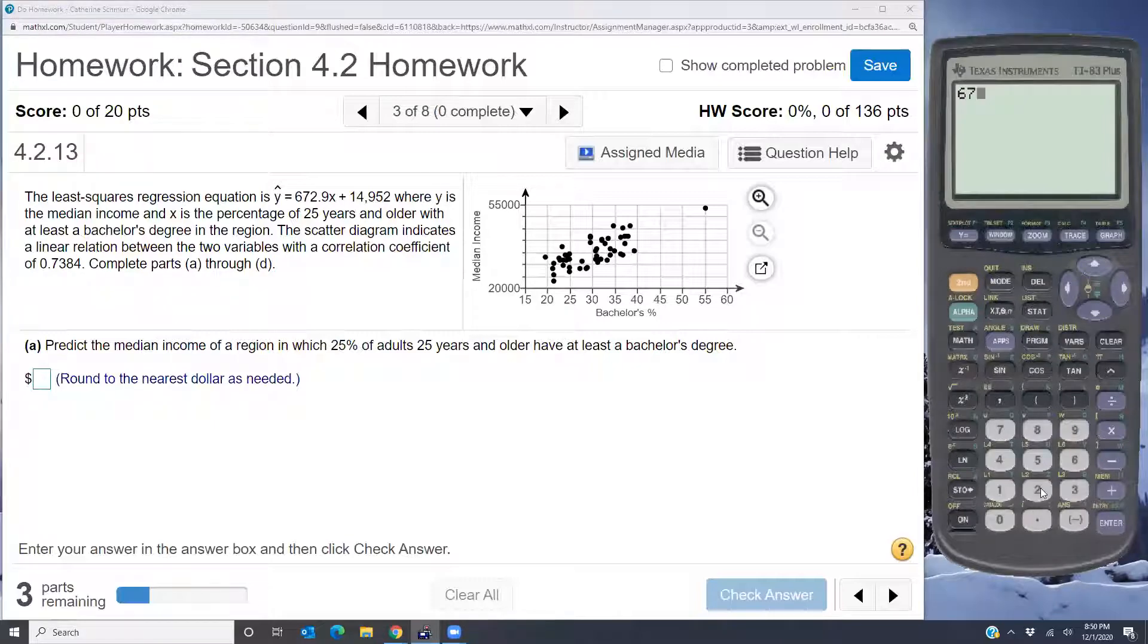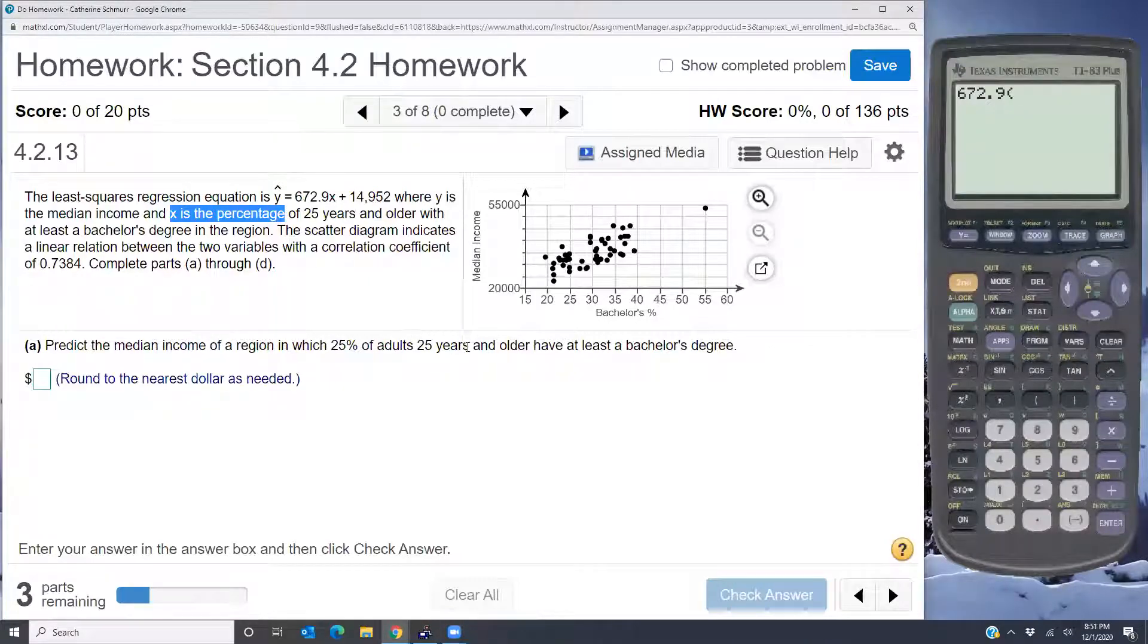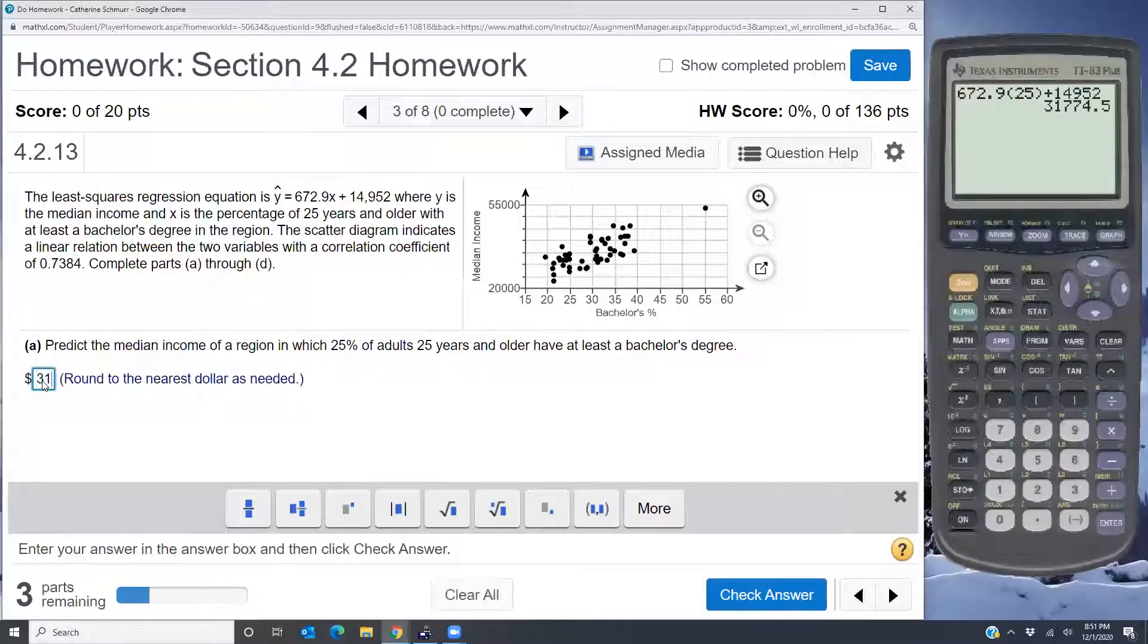So I'm going to put in my 672.9, and 25 percent of adults, that's going to be my x, because up here it says x is the percentage of 25 year olds and older who have a bachelor's degree. So I'm going to put in my 25 percent for x and then I'll add the 14,952, so plus 14,952. And so I get 31,774.50, and they say round to the nearest dollar. So since it's 0.5 I have to round up to 31,775.